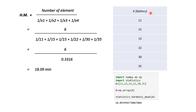In the Jupyter Notebook, I used the same data points and calculated the harmonic mean. The simple way is to import the statistics module, then use statistics.harmonic_mean(). I got the same output — 18.09 — as what we calculated manually.